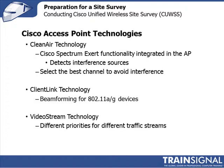The Client Link technology is really about mixed-mode networks where you have a combination of 802.11 a/g/n devices, ensuring they operate at the best possible data rate. It kicks in when clients are on the edge of the cell, using beamforming technologies similar to those defined in 802.11n to improve the signal-to-noise ratio for 802.11 a/g legacy equipment, enabling those clients to reach higher data rates.